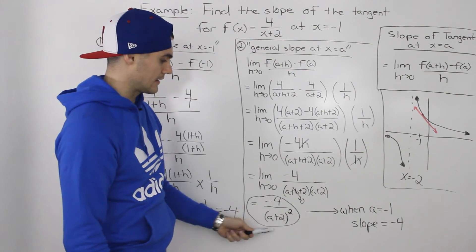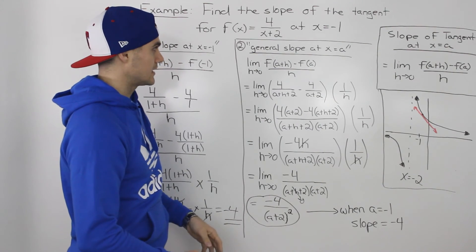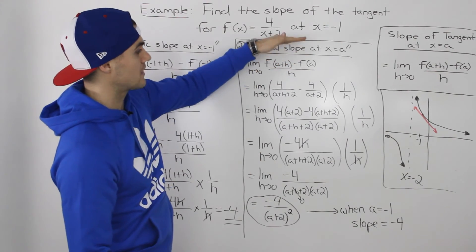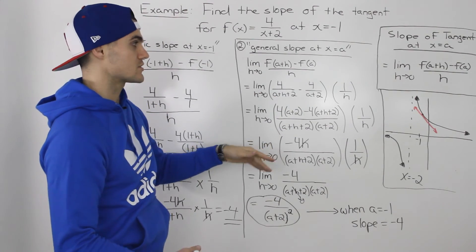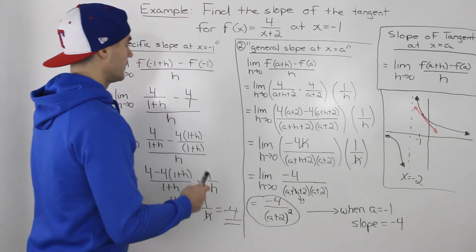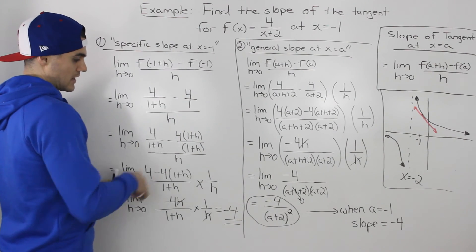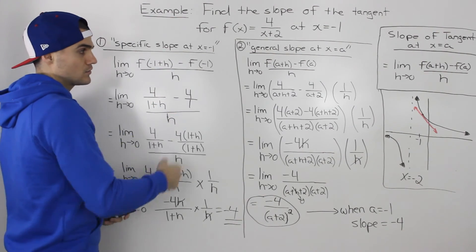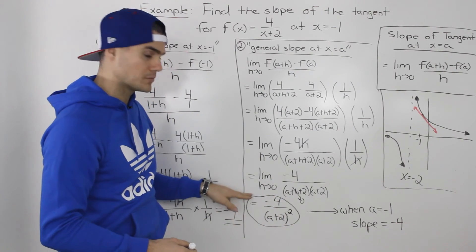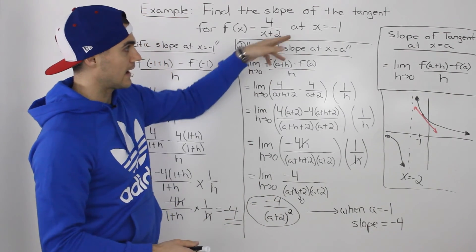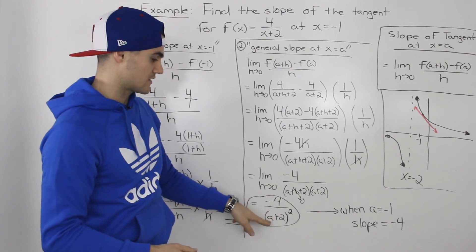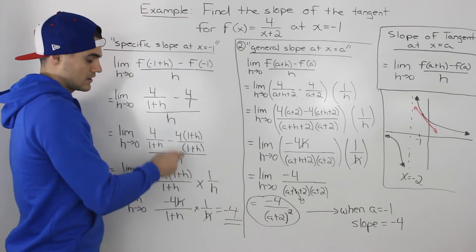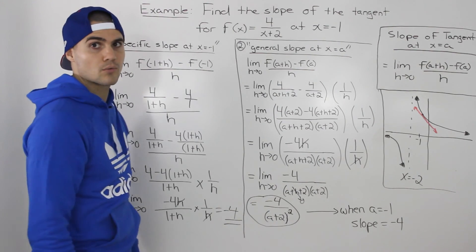Notice how versatile this general equation is. If the question asked for the slope at x = -1, 0, 1, and 2, doing Method 1 would require repeating the algebra four separate times. With Method 2, you derive the general formula -4/(a+2)² once, then simply plug in each x value. Your textbook in this chapter will mostly show Method 1, but either way works.